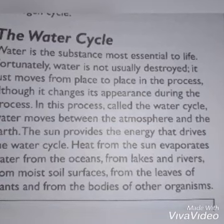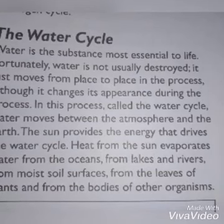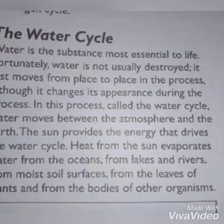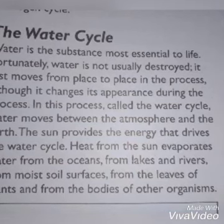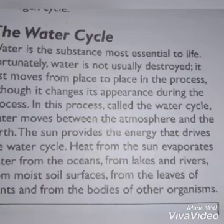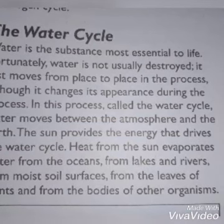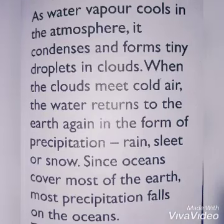The Sun provides the energy that drives the water cycle. Heat from the Sun evaporates water from the oceans, from lakes and rivers, from moist soil surfaces, from the leaves of plants, and from the bodies of other organisms. As water vapor cools in the atmosphere, it condenses and forms tiny droplets in clouds.